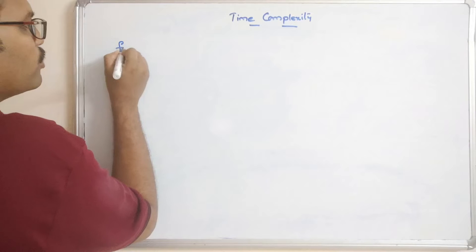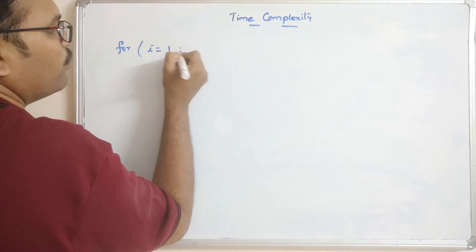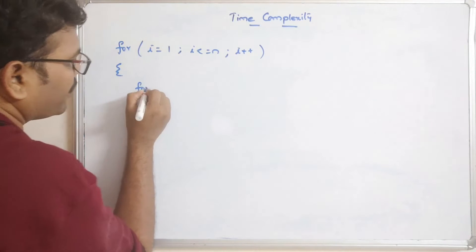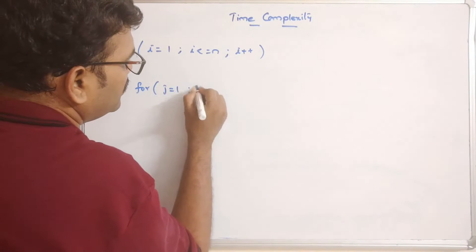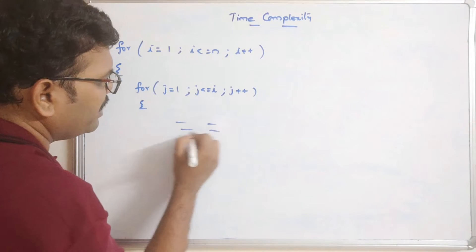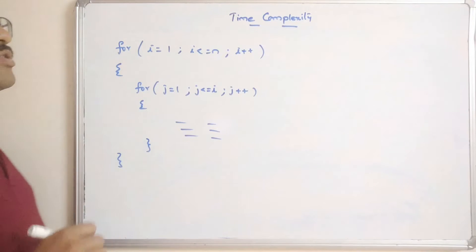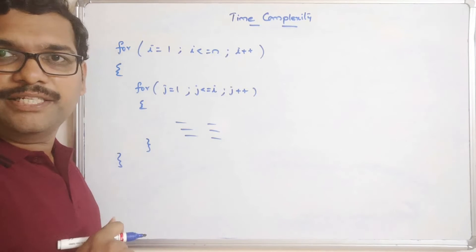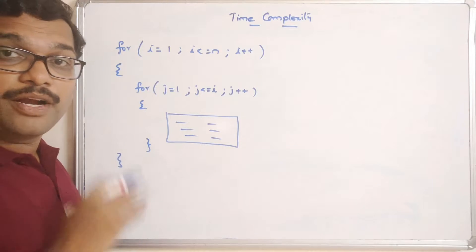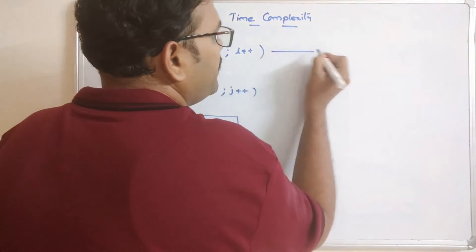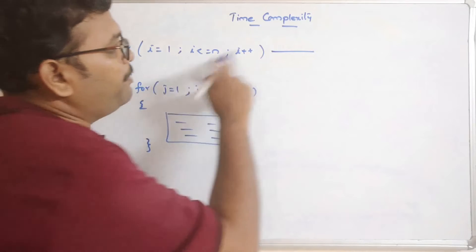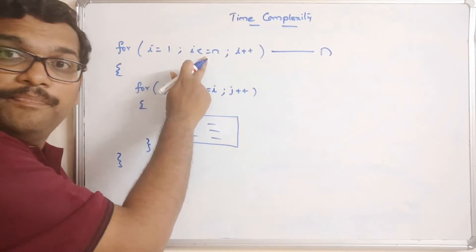Let us take one example: for i equal to 1, i less than or equal to n, i plus plus — and inside that a nested loop. How many times is the outer loop repeated? Obviously it will be repeated n times, since i goes from 1 to n.